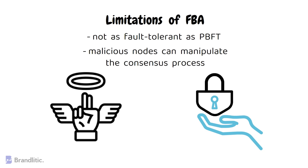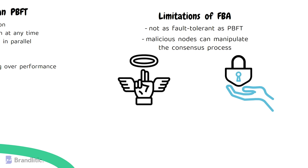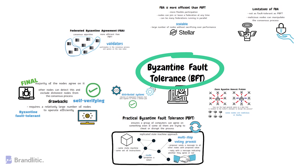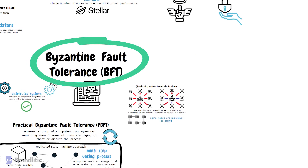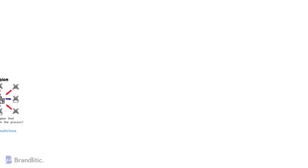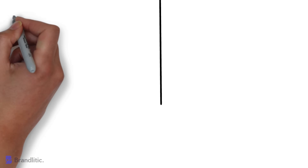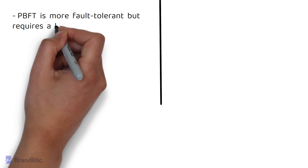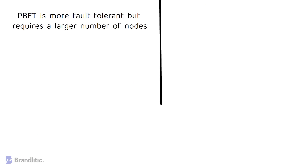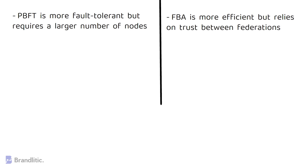To summarize, Byzantine fault tolerance is a key concept in ensuring the reliability and security of a distributed system. PBFT and FBA are two possible solutions to the Byzantine generals problem, each with their own advantages and drawbacks. In a nutshell, PBFT is more fault-tolerant but requires a larger number of nodes, while FBA is more efficient but relies on trust between federations.